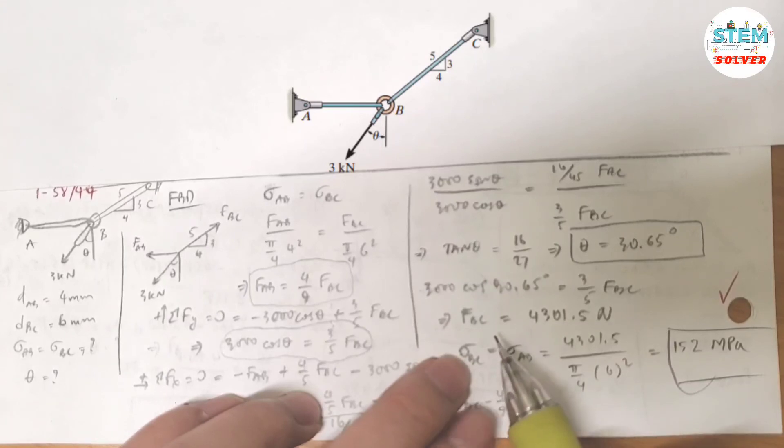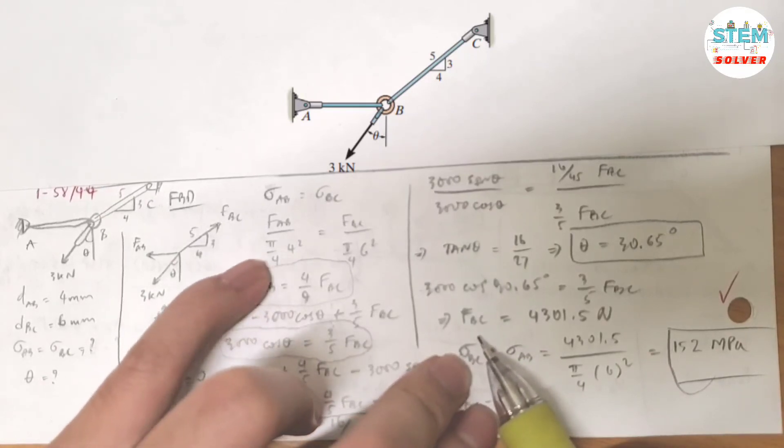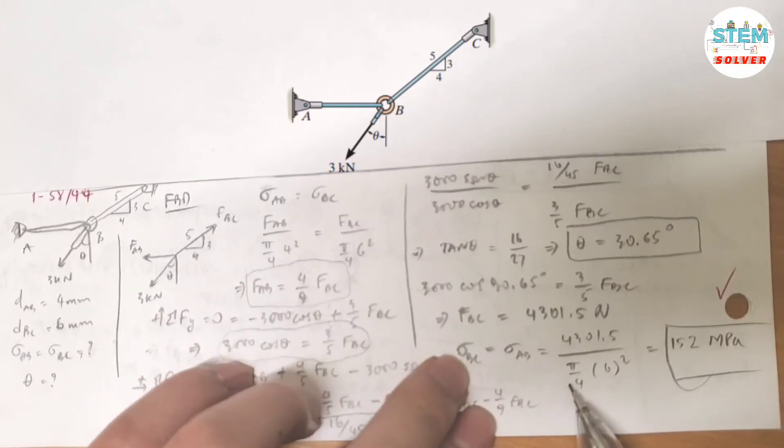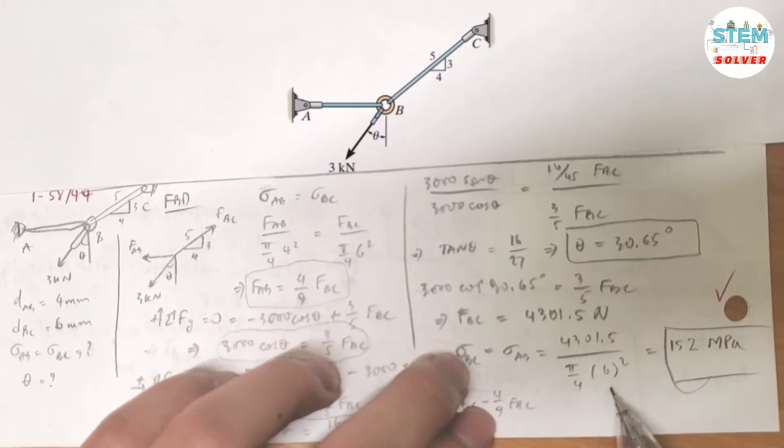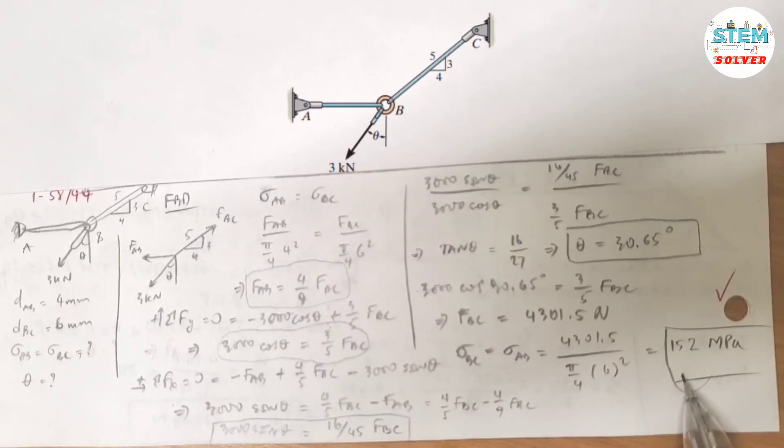Since I know the normal force, I can find the normal stress by dividing that by the area. So let's pick, since I'm looking at FBC, I need to find the area of FBC. And that area is π/4 times 6 squared. So I end up with 152 MPa for the normal stress in rod AB and rod BC.